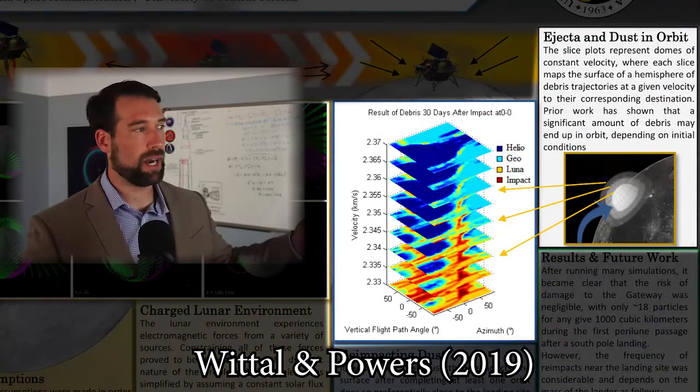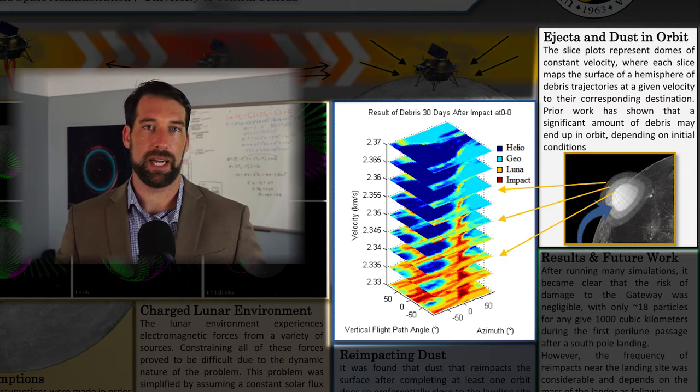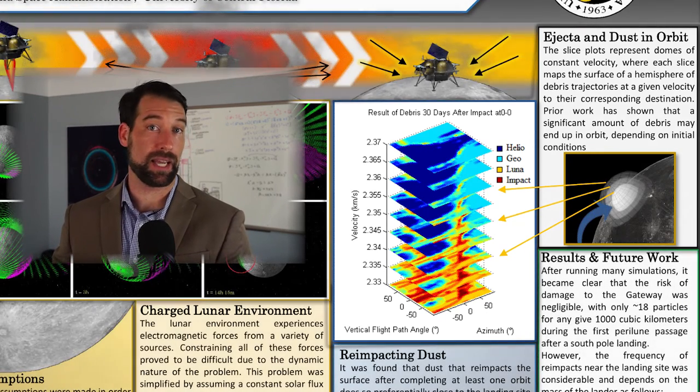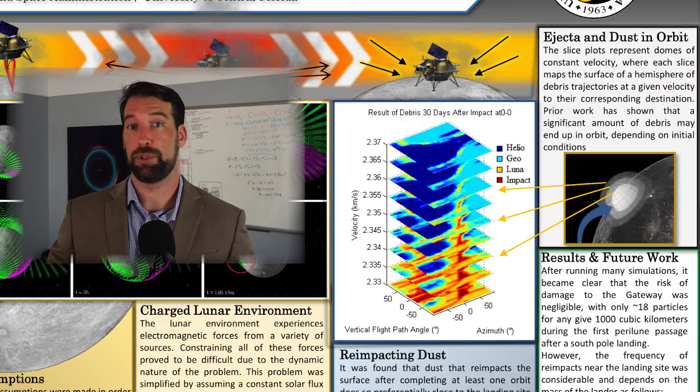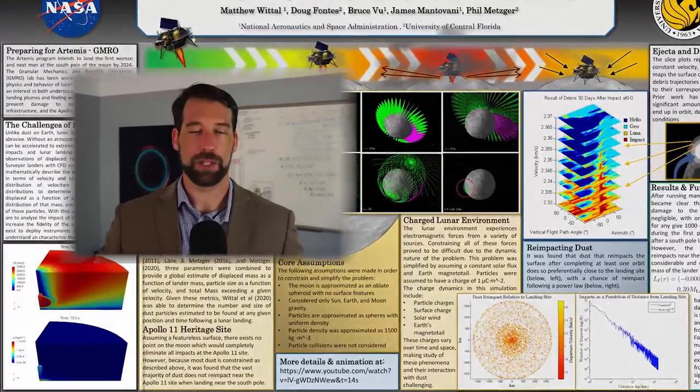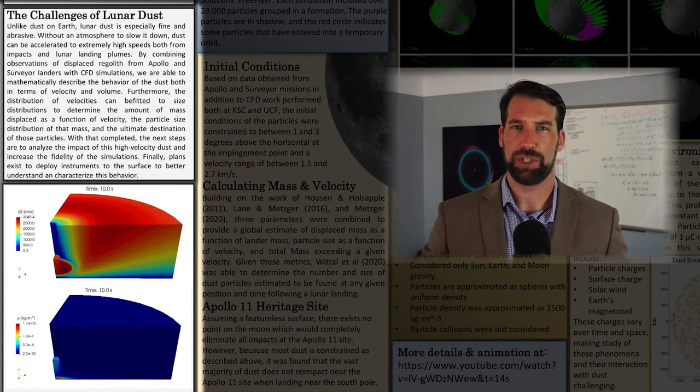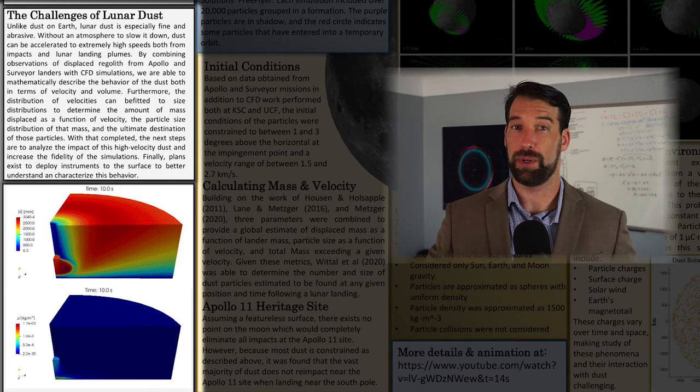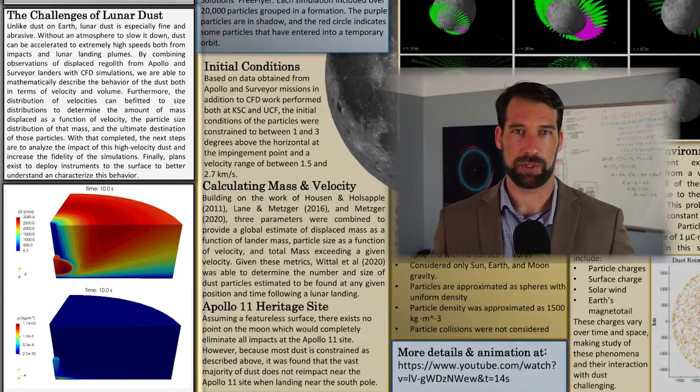Previous work investigated the behavior of high-velocity impact ejecta generated by impacts, considering multi-body dynamics. This work showed that a non-negligible amount of this high-velocity ejecta could remain in orbit for up to 20 days on average, and in some cases up to 10 years. This raised concerns about high-velocity dust generated by lander plumes, which have been simulated and seen to leave the impingement point at extremely high velocities near or above lunar escape velocity of about 2.3 kilometers per second.